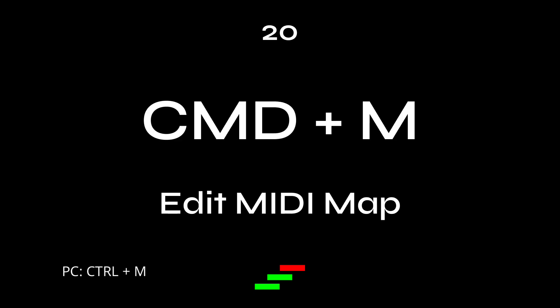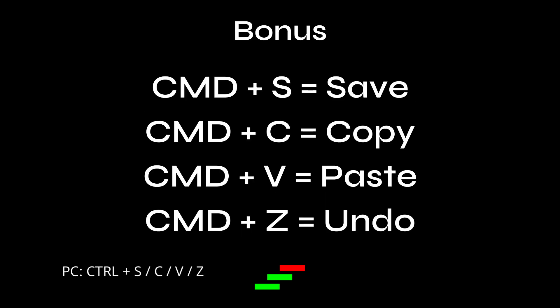Twenty: Command-M — brings up the edit MIDI map. Bonus, and you already know these: Command-S is save, Command-C is copy, Command-V is paste, and Command-Z is undo.